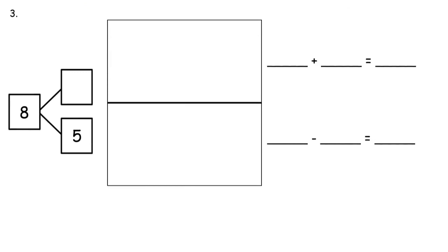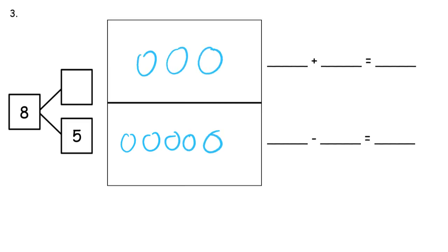Now we have another one: a total of eight with parts five and three. If this part is five, the other part has to be three — otherwise it would be more or less than eight. So we take our two parts, three and five, and add them together. Three plus five equals eight — that's our total.